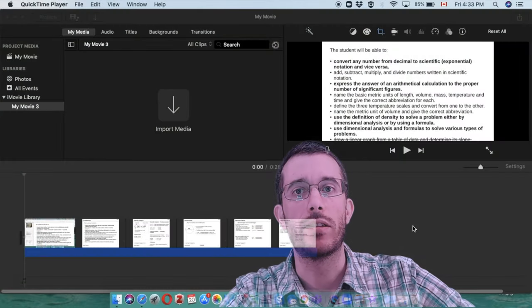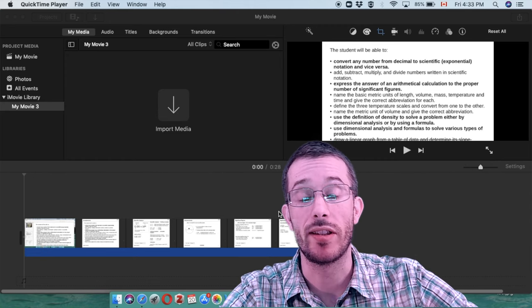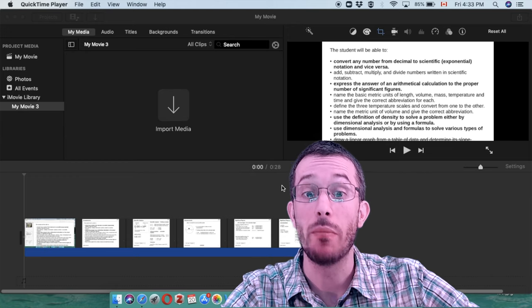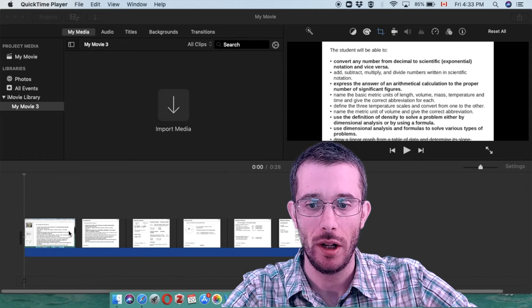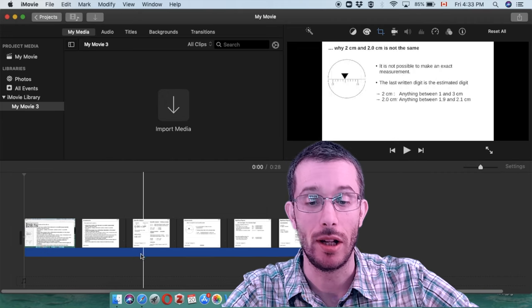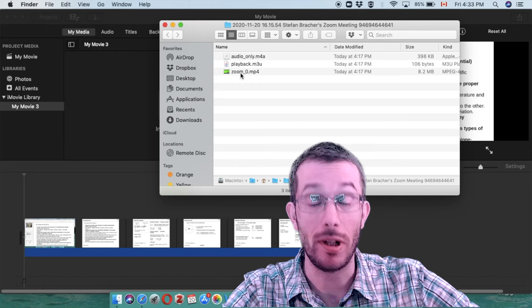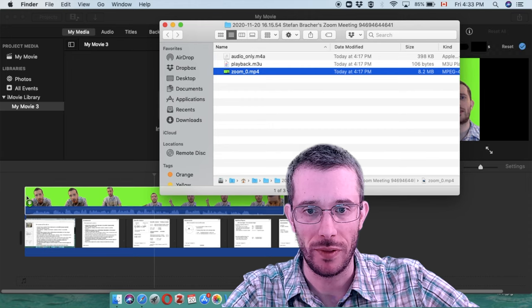So how do we combine a video of a presentation with my green screen overlay? Here I'm in iMovie, I already created a new movie, and I have the video of my presentation in here. All I'm going to do is take my green screen video and drag it on top of it.